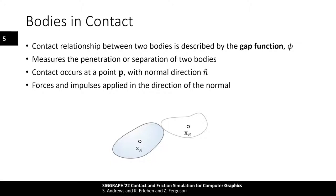In order to understand how to compute contact forces, we first need a way to formally define how two bodies that might be in contact are interacting. To this end, we introduce something called the gap function, which is a scalar value that tells us the amount of separation or penetration between two bodies. When the gap function is zero, the two bodies are exactly touching at a point on their surfaces — called the contact point. If the surfaces of both bodies are smooth, there will be a direction perpendicular to both surfaces called the contact normal. A point and a perpendicular direction define a plane, which is helpful for describing the kinematics and dynamics of bodies during contact.